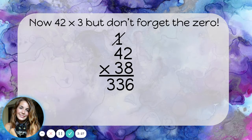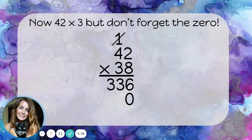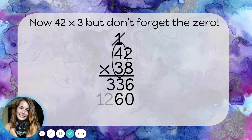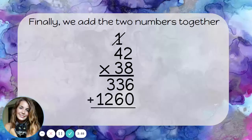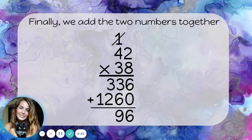Now we need to put a zero in the ones place of our second number before we start multiplying forty-two times three. To multiply forty-two times three, I would multiply the three times the ones place — three times two is six. And then the three times the tens place — three times four is twelve. And do you remember the final step? Just add the two numbers together. Six plus zero is six, three plus six is nine, three plus two is five, and zero plus one is one. So forty-two times thirty-eight is one thousand five hundred ninety-six.